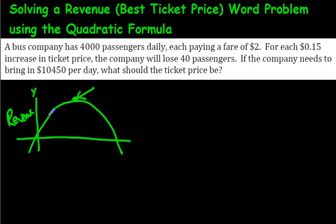To get the same revenue, a company can either charge a very cheap price or a very expensive price. If it's cheap, lots of people will buy it but you make less per sale. If it's expensive, you sell less but make more per item. Businesses have to choose that sweet spot at the top of the parabola — not too expensive and not too cheap.